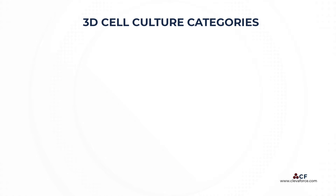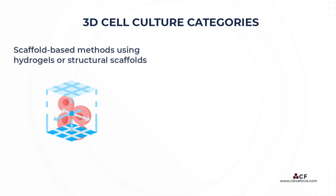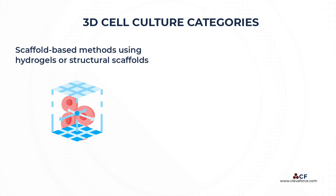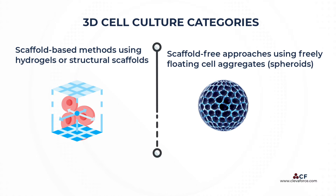3D cell culture models may be generally classified into two principal categories based on method: scaffold-based methods using hydrogels or structural scaffolds, and scaffold-free approaches using freely floating cell aggregates, typically referred to as spheroids. The choice of method is determined primarily by the nature of the cells themselves, but also by the goals and purpose of the 3D culture.